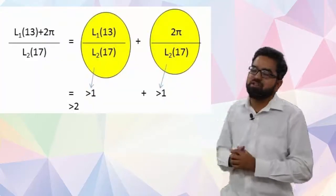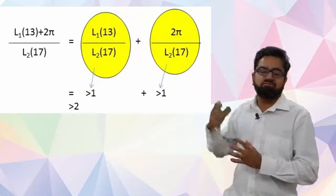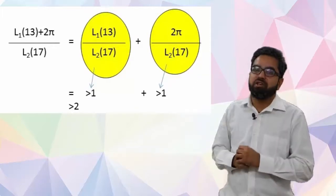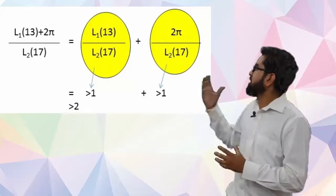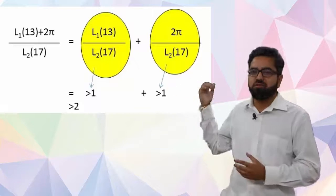Now coming back to the question: L1(13) divided by L2(17) is always greater than 1, plus 2π divided by L2(17) is always greater than 1. That means the value of this expression is greater than 2. So the answer of this question is option C, greater than 2. Thank you.